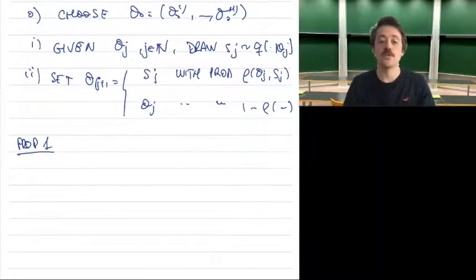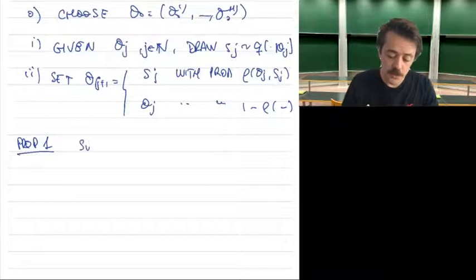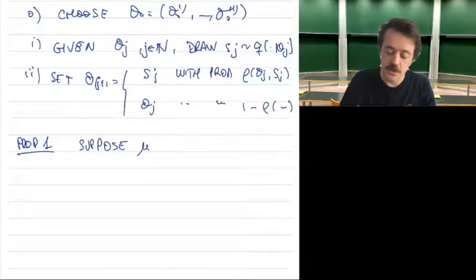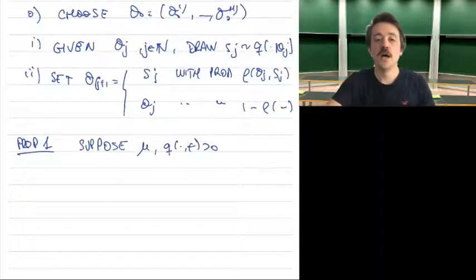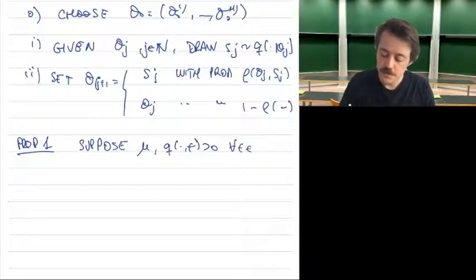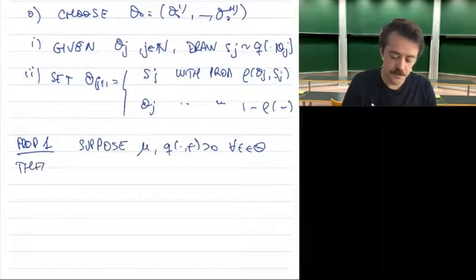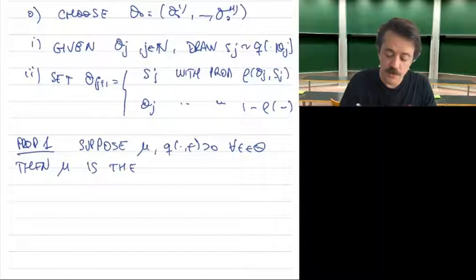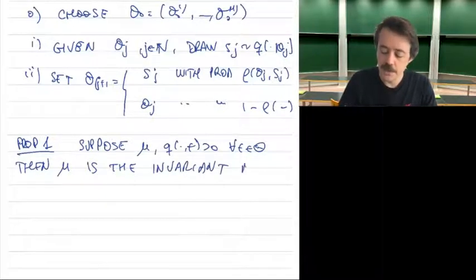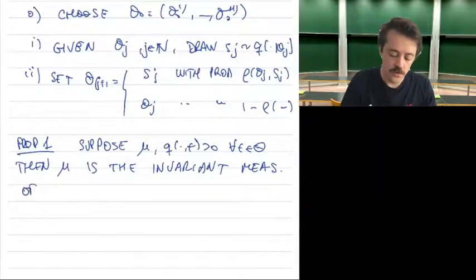Let's introduce a result that justifies the use of the algorithm. Suppose we have strict positivity in μ and also in the proposal distribution for all t. Then μ is the invariant measure of the Markov chain we've constructed — exactly what we wished to have.